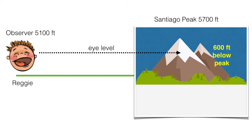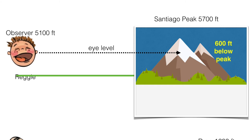So Reggie believes in a flat Earth, and the observer point where John parked his car is at about 5,100 feet. But Santiago Peak is about 5,700 feet. So that means that the mountain should look higher, should look higher than our eye level. So our eye level should hit the mountain 600 feet below the actual mountain peak. That's what Reggie says.